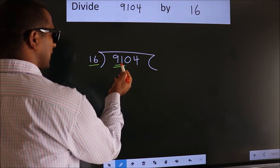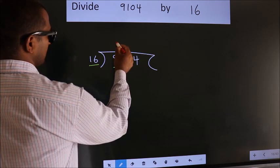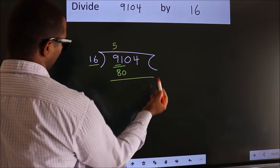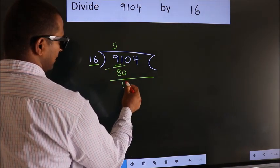A number close to 91 in the 16 table is 16 fives, 80. Now, we should subtract. We get 11.